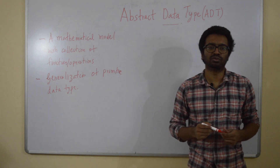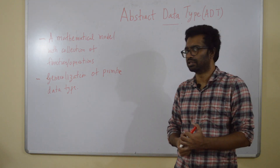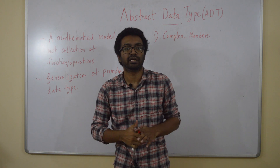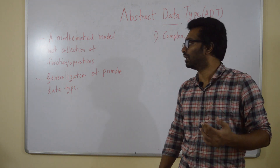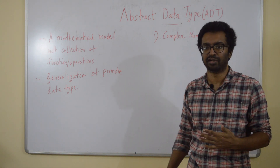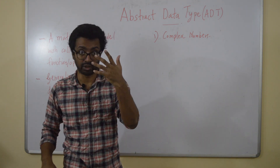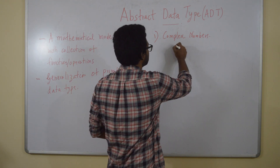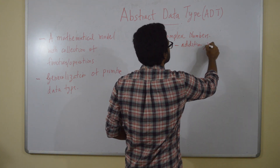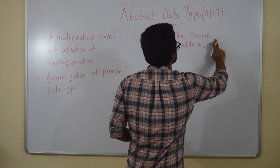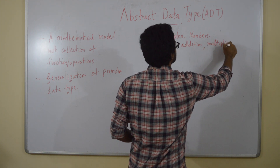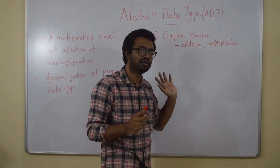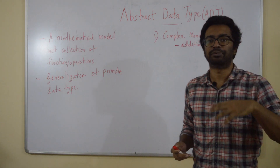Let's try to understand this through a few examples. Example 1: complex numbers. When you say an abstract data type, you have to tell what are the operations or functions defined on that data type. So complex numbers is an abstract data type, and the operations you can associate with complex numbers can be addition, multiplication, the real component of the complex number, the imaginary component, etc. Those operations correspond to the abstract data type called complex numbers.